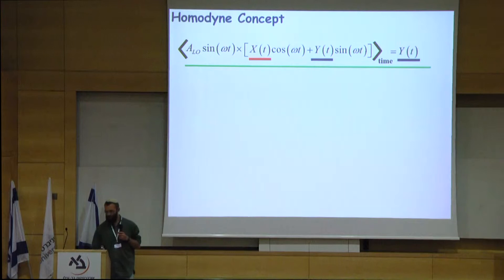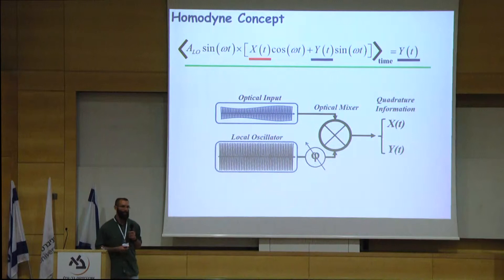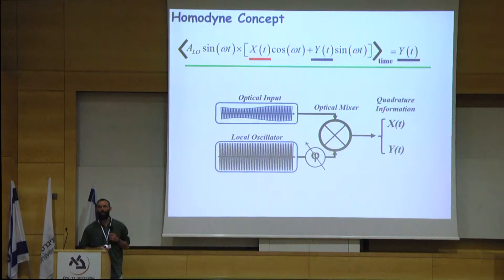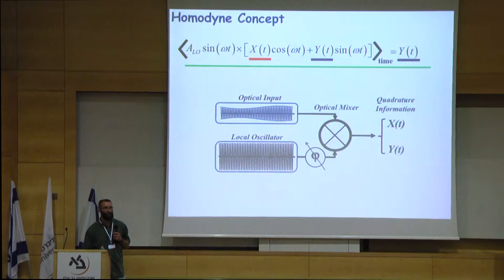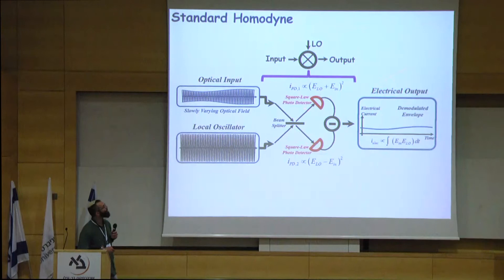Experimentally, we have our input optical signal that we want to measure, we have a strong local oscillator, and we need some kind of a mechanism to control the phase of the local oscillator and an optical mixer. The only problem is that pure optical mixers do not really exist. So instead, the standard technique for homodyne detection uses the electrical non-linearity of photodetectors.